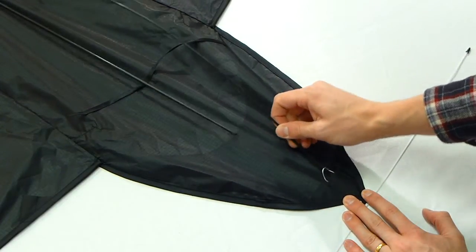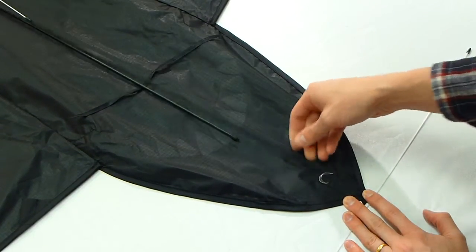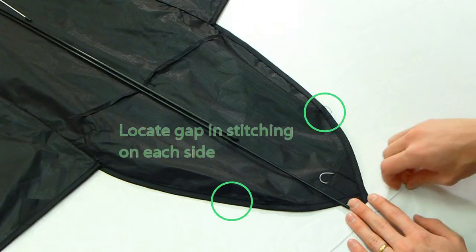And remove the long black spar just from this pocket and out from under this string loop. On each side of the head there is a spot where there is a gap in the stitching.